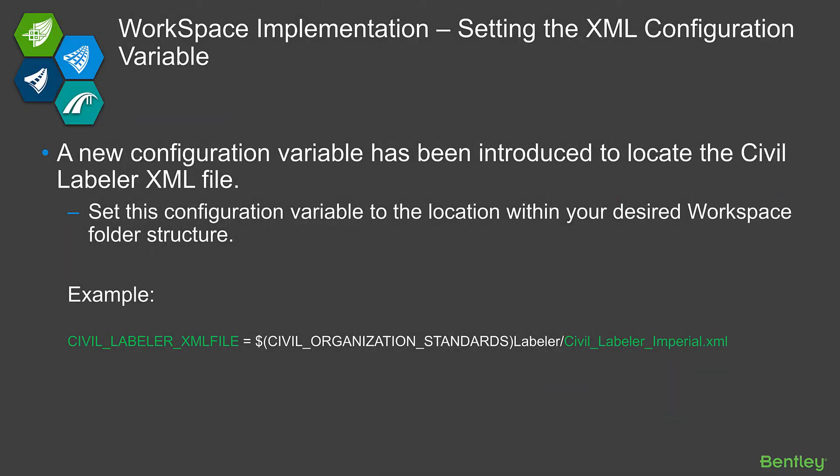We do have a new configuration variable that needs to be set, which points to our Civil Labeler imperial or metric XML file. I have shown the configuration variable that is required — your path would obviously differ. I put it in a subfolder called 'labeler,' for example, but you don't have to do that. You will set this configuration variable to point to the full path and file name of the XML file that contains your labeler data. Make sure you get this set properly in your workspace so that when you open the tool, it will know what XML file to open. If this is not set, you're going to see a message stating as such.